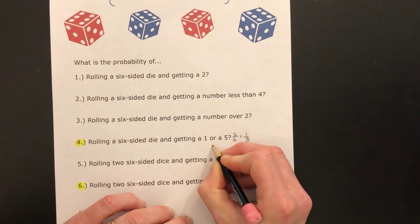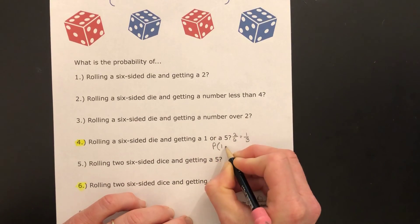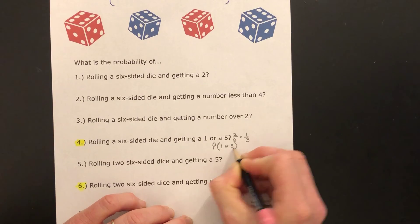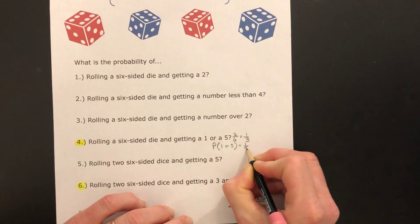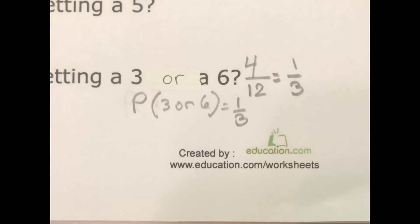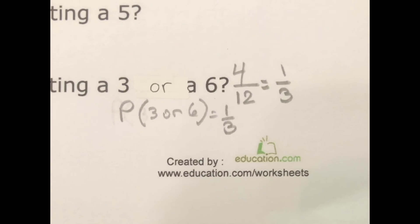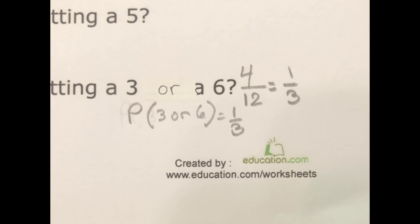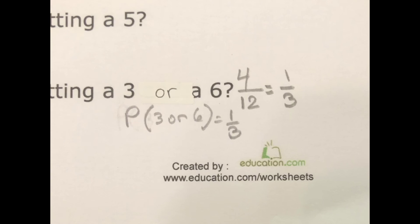The probability of one or five is one-third, one-third. And for number six, you'll write the probability of getting a three or a six is also one-third.